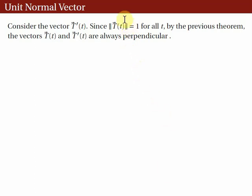The unit tangent vector, capital T, being a unit vector, its norm is equal to 1 for all t — so it's a constant. By the previous theorem, the vectors T(t) and T'(t) are always perpendicular. From this, we will define later the unit normal vector.